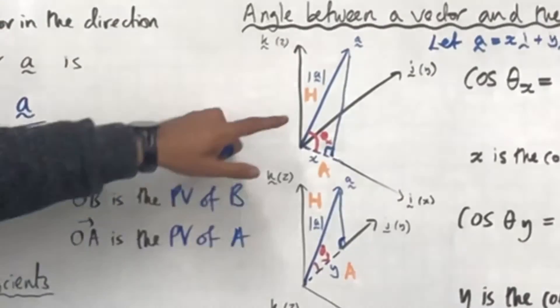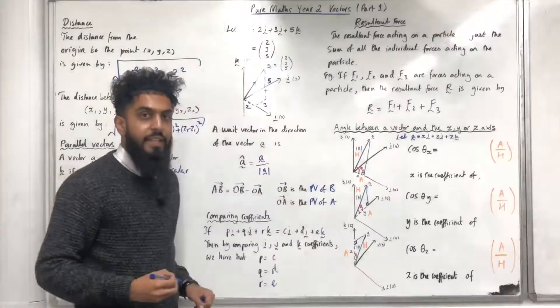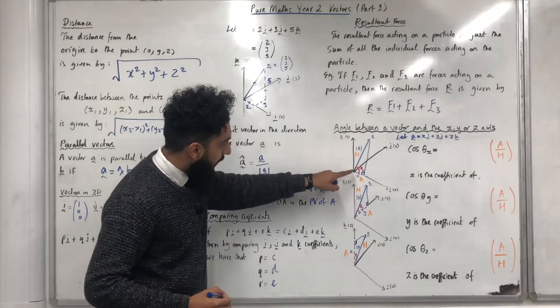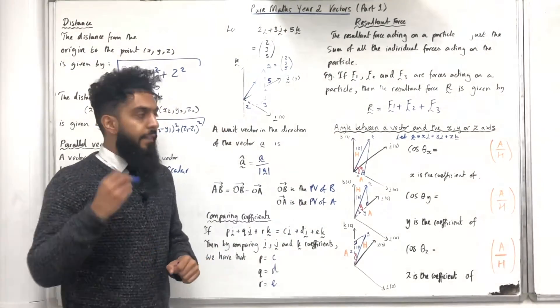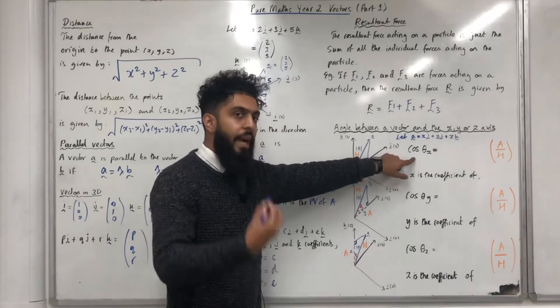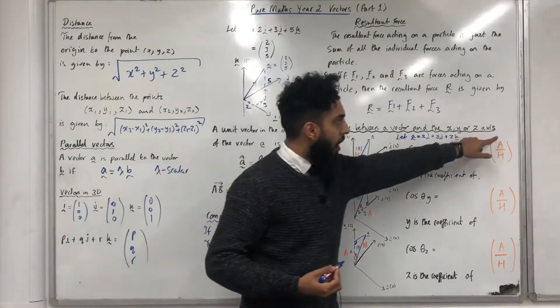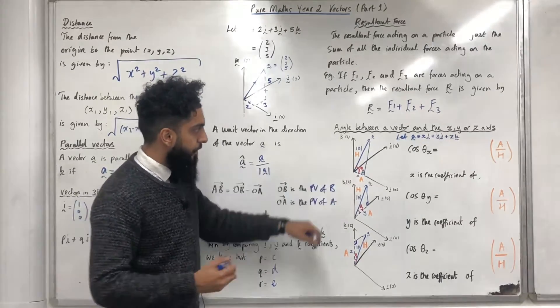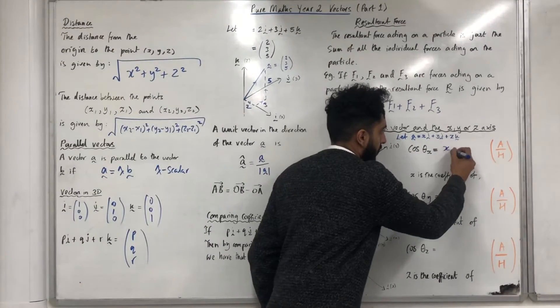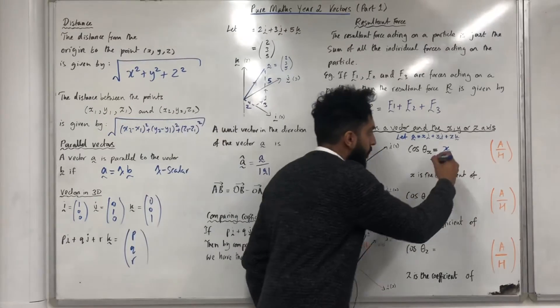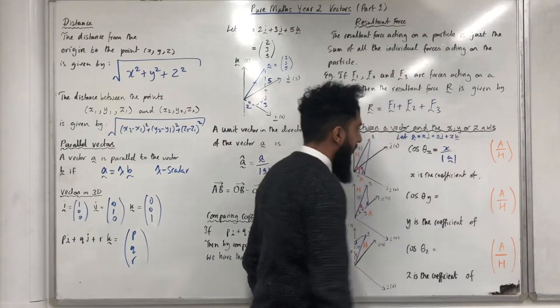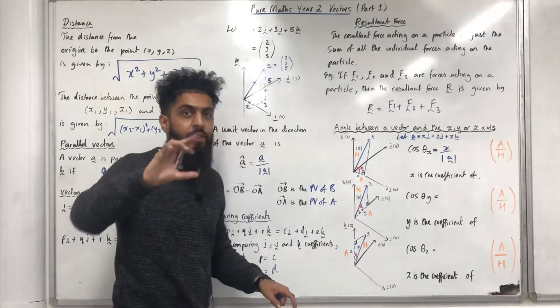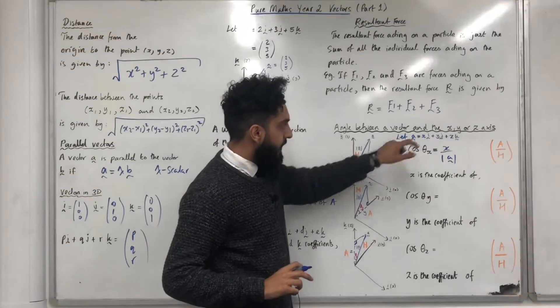I want to work out, first of all, theta x, the angle between the vector a and the x-axis. Cos theta x can be calculated using adjacent over hypotenuse. So the adjacent is just x over the hypotenuse, which is the magnitude of the vector a. x is just the coefficient of the vector i.